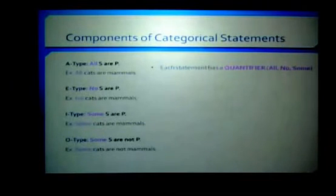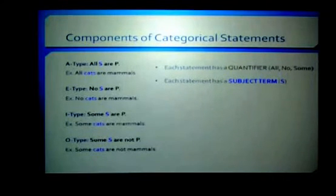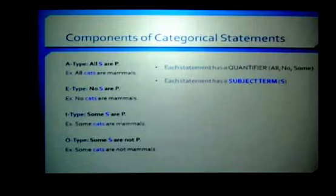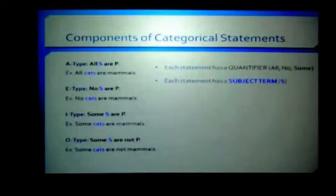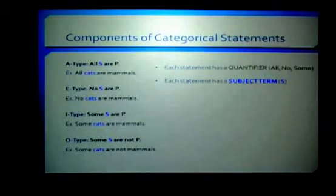All categorical statements have subject terms. The subject term is always in the first position, represented by the variable S. The subject term is the term that the statement is about. So for 'all cats are mammals,' the statement is about cats. For 'no cats are mammals,' 'some cats are mammals,' and 'some cats are not mammals,' the subject term is cats in each case.